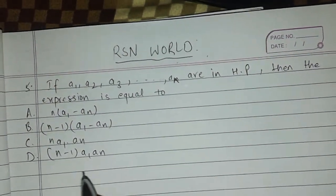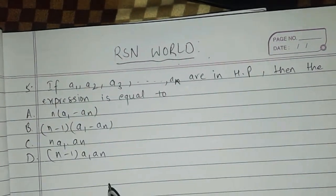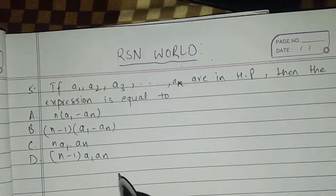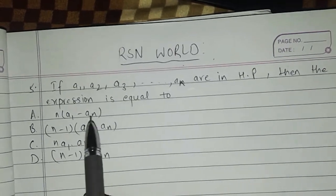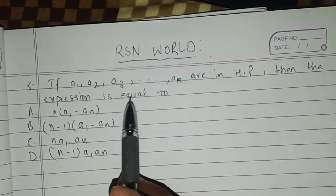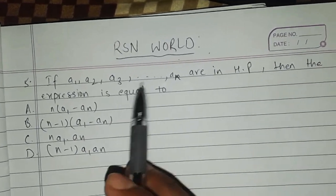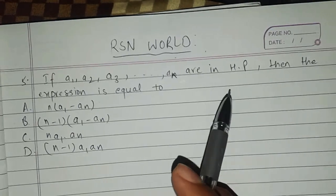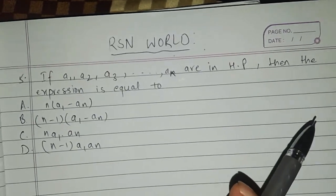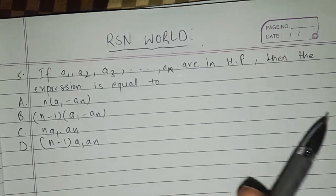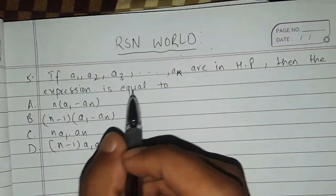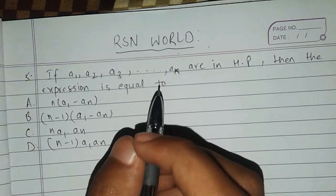Hello, this is Reymans Reister and you are seeing the Information World. Today I am back with a problem: if a1, a2, a3, ... up to 2n terms, that is a_n, are in Harmonic Progression, then what is the expression equal to?